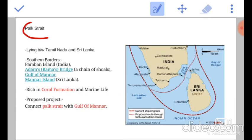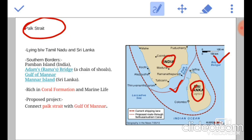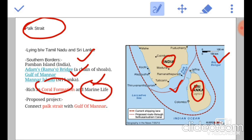Next is Palk Strait. This strait connects the Gulf of Mannar and the Bay of Bengal. It is located between Tamil Nadu and Sri Lanka. It has Pamban island and Manar island, and the Gulf of Mannar has its southern borders. It is also rich in coral formation and marine life. There is a proposed project to connect the Palk Strait and Gulf of Mannar, but because of religious barriers it wasn't implemented.